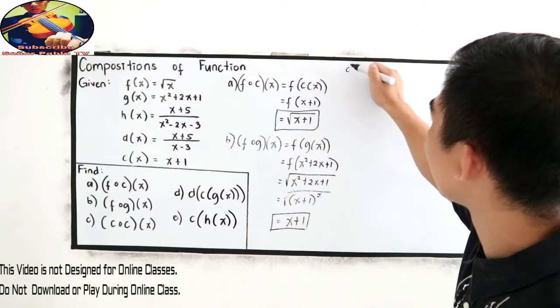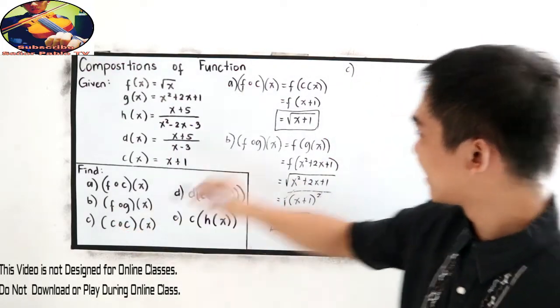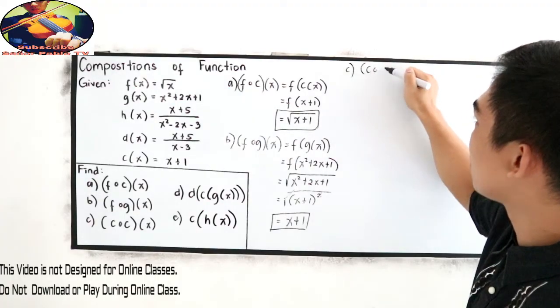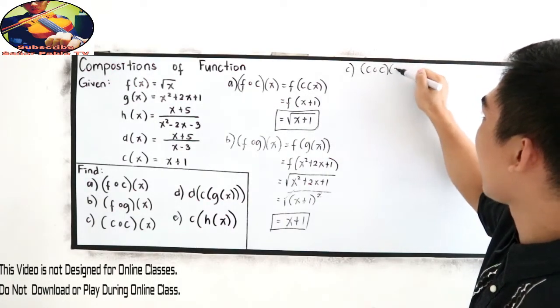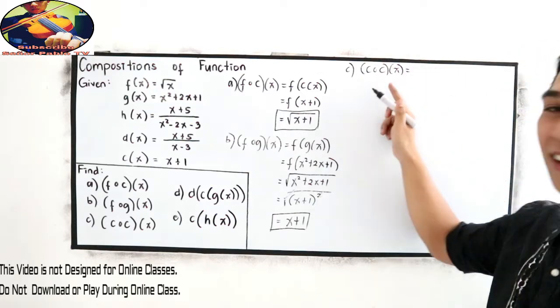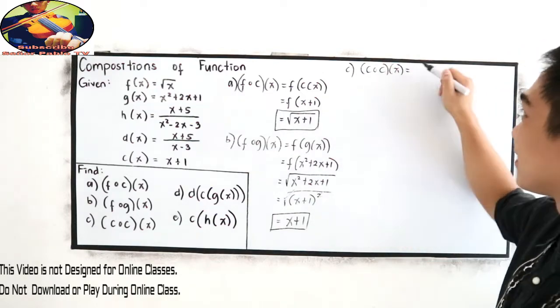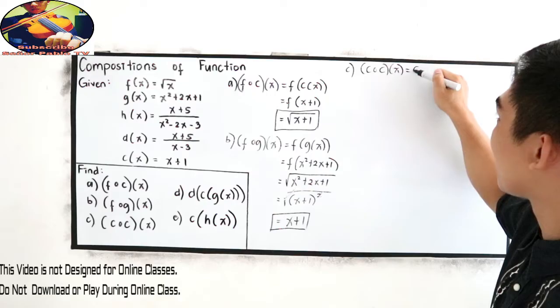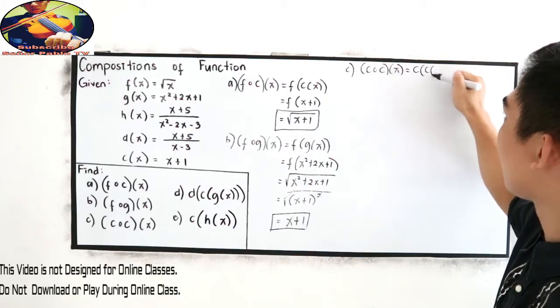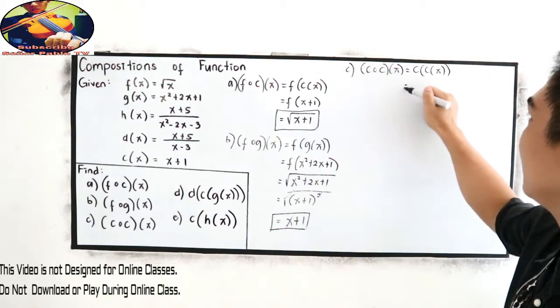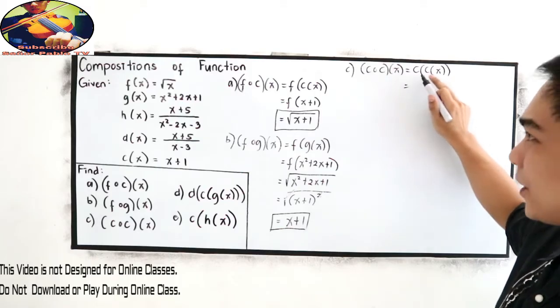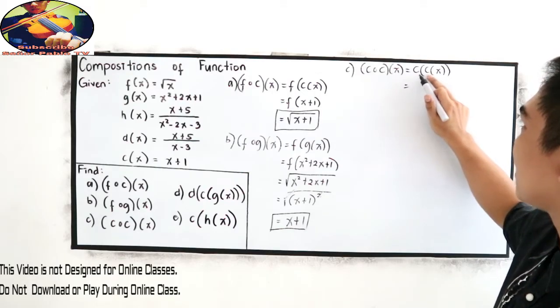Letter C is C composed of C of x. This is equal to C of C of x. So, first, find C of x.